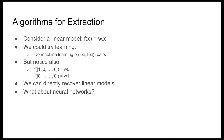Now that we know why someone might do model extraction, let's figure out how. We'll start by describing a simple case: a linear model. The natural thing is you query on 100 points, you now have 100 outputs, and then do machine learning on those input-output pairs. But also notice that for a linear model specifically, if you query on all zeros except the first input is a 1, you've recovered the first coordinate of the weight. If you query on all zeros except the second coordinate as 1, you recover the second coordinate of the weights. Doing this for every coordinate, you can recover the linear model exactly. These are essentially the same thing for linear models, but they capture two different philosophies of model extraction.